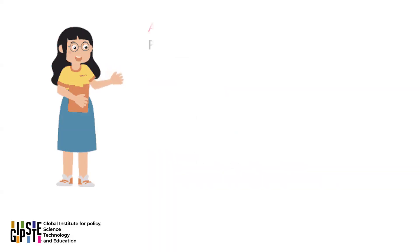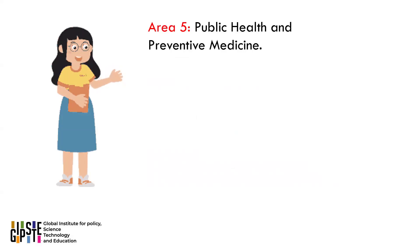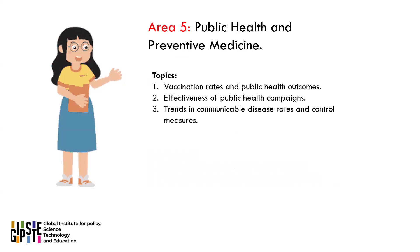Area 5: Public Health and Preventive Medicine. Here are three topics for public health and preventive medicine to be considered: 1. Vaccination rates and public health outcomes. 2. Effectiveness of public health campaigns. 3. Trends in communicable disease rates and control measures.